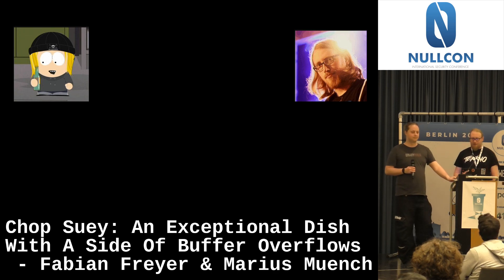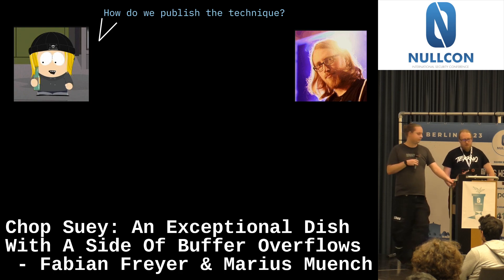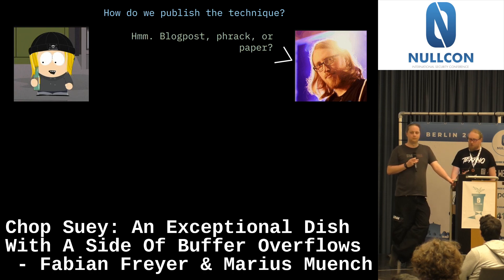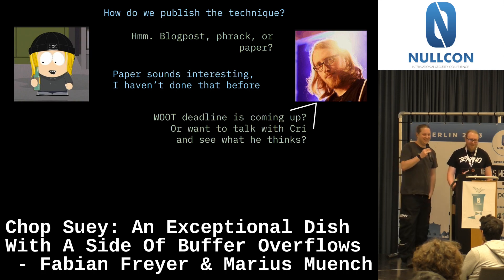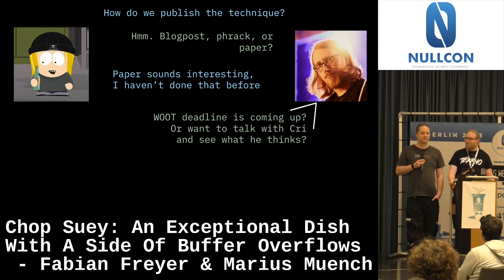This brings us to the second course: writing a paper. After the CTF, we sat down and brainstormed how to actually publish this technique and get it out to people. I suggested multiple ways: we could write a blog post, try to get a Phrack article, or — I'm an academic — we could write a paper. Fabs hadn't written a paper before, only blog posts. He thought: let's try something new, can't be that difficult. I checked the calendar and saw that WOOT, a small workshop good for this type of research, was coming up. I suggested maybe involving Cristiano, a professor at my research group, to see what he thinks.